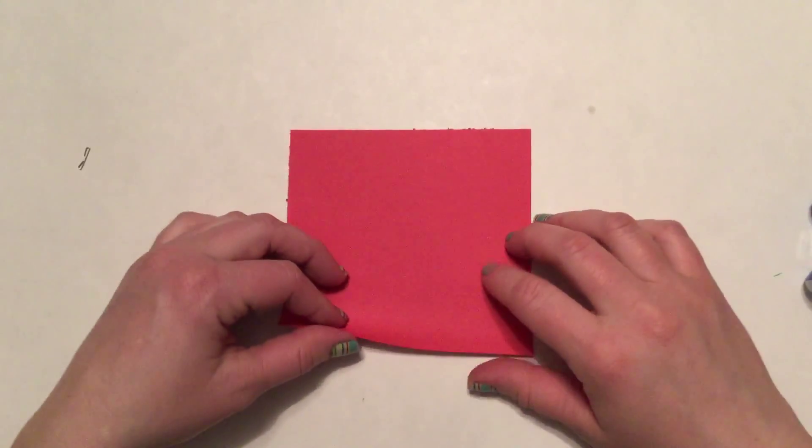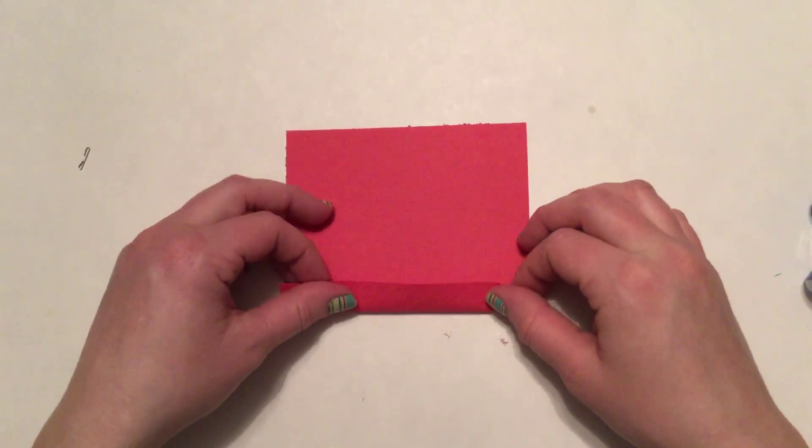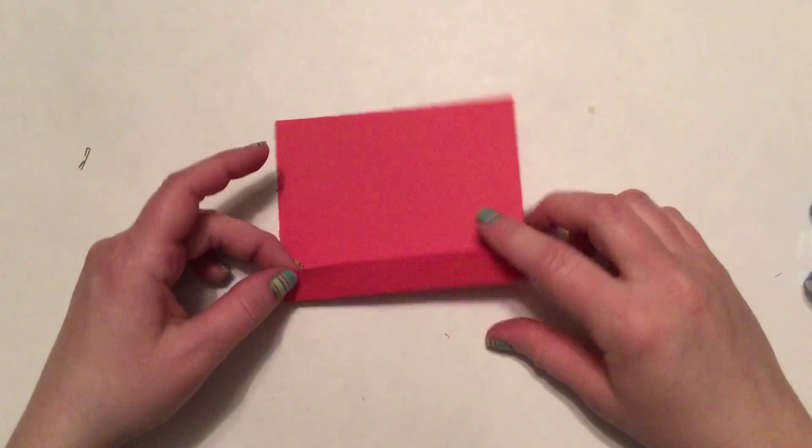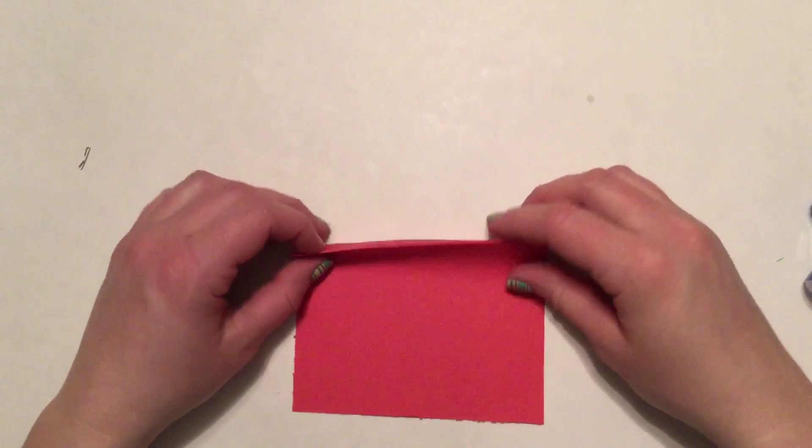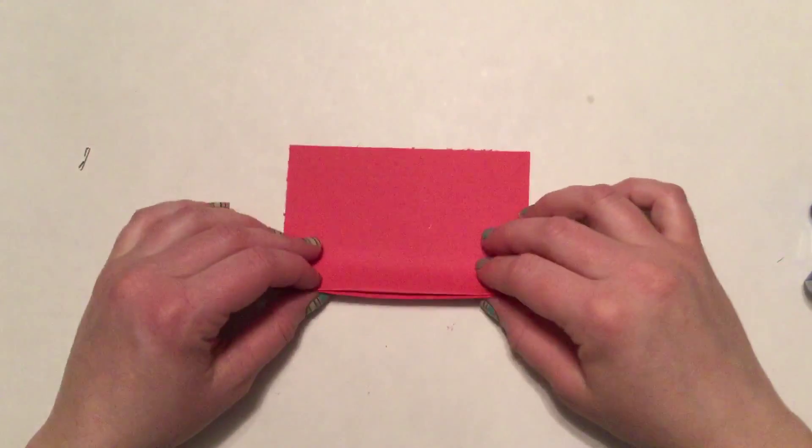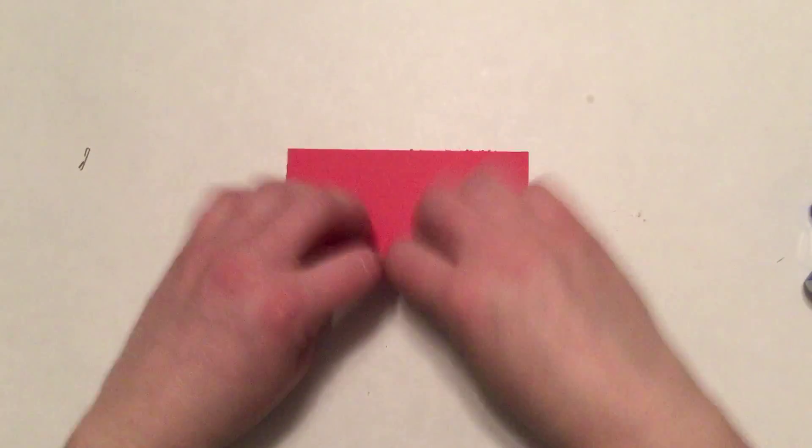Take your paper and fold it a little bit away from you and crease that edge. Then flip it and fold it back towards yourself and crease it. Flip away from yourself and fold.